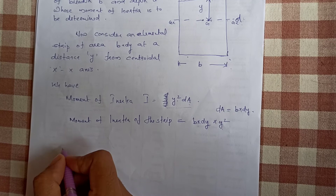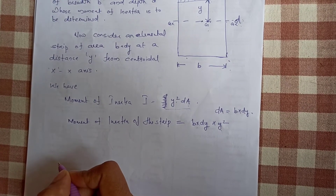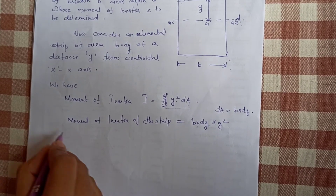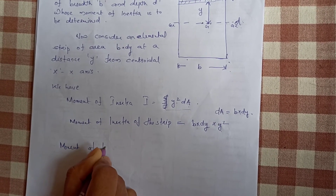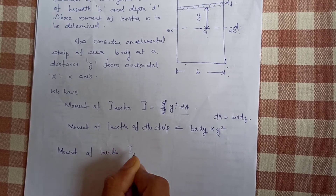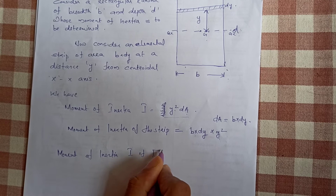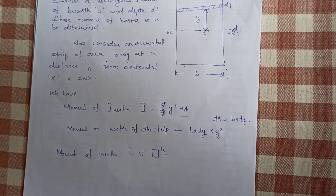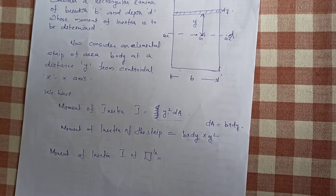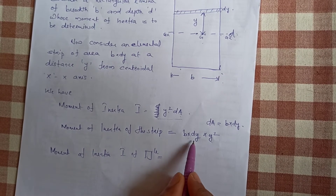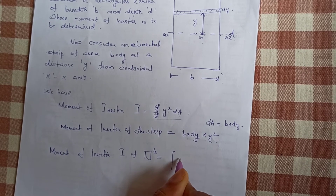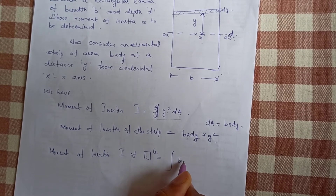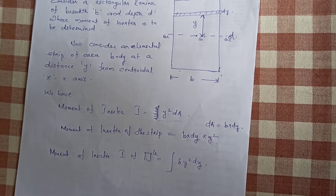So this is the whole area of moment of inertia. The moment of inertia I of the rectangle — I of the whole area — this is the rectangular area. This is the strip B dy into y². You can integrate this: it is B into y² dy. You can integrate this way to get any dimension.